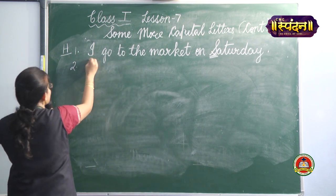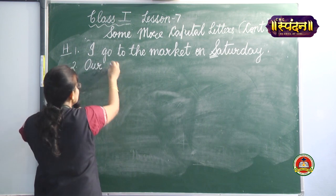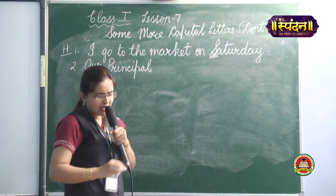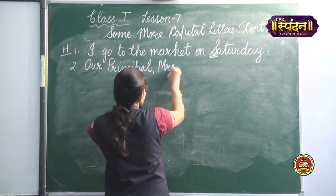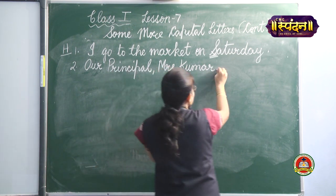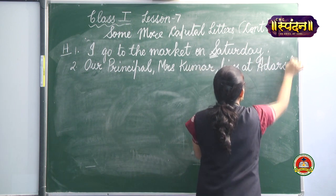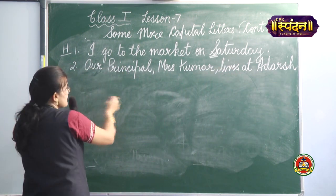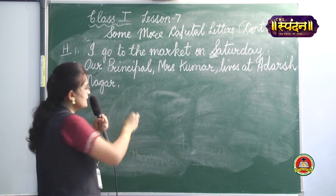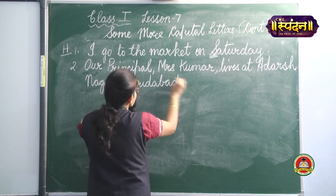Remember the rule — the first letter of a sentence will always be in capital. Then 'Principal' — P will be in capital because it is a very important title. 'Mrs. Kumar' — Mrs. M will be in capital, Kumar's K will be in capital as it is a special name of a person. 'Lives at Adarsh Nagar' — A will be in capital, Nagar's N will be in capital as these are special names of a place, and Faridabad's F will be in capital — because these are special names of places.